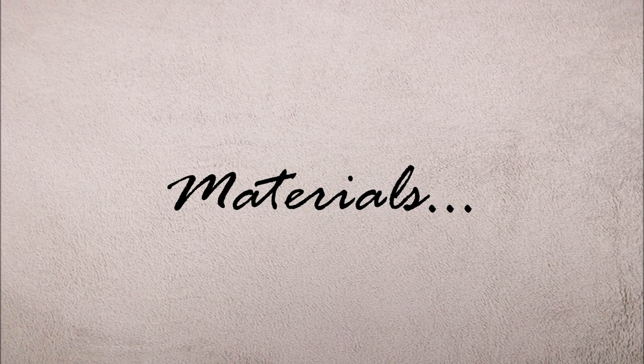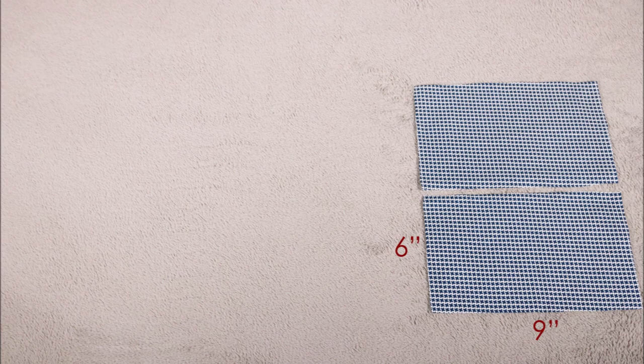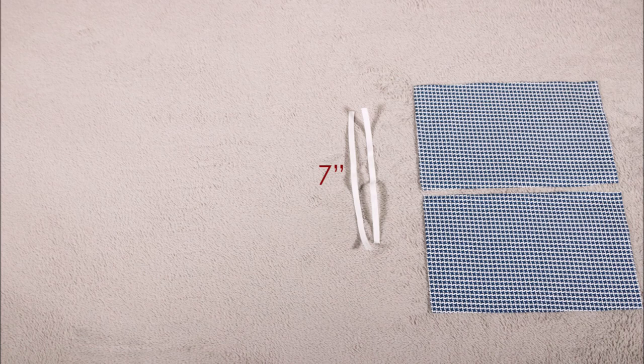First, let's look at the materials needed to make the mask. You'll need two pieces of cotton fabric, these are six inches by nine inches each. I'm using cotton woven fabric—quilt fabrics work best for this. You'll need two pieces of elastic strips, these are quarter inch in thickness and seven inches long.